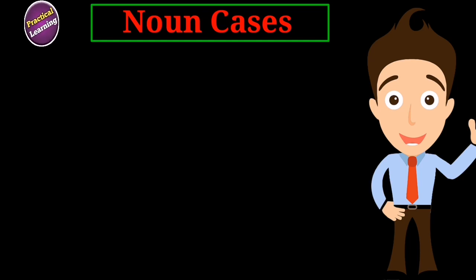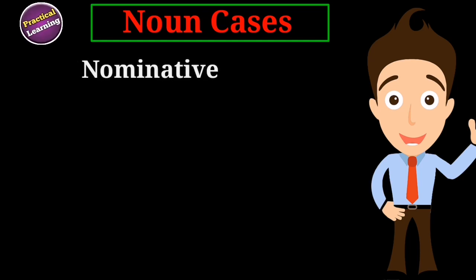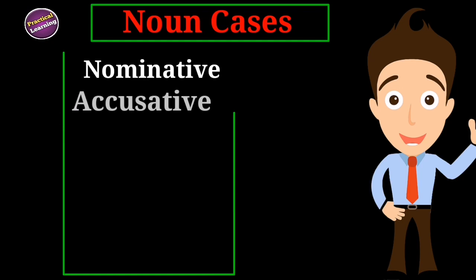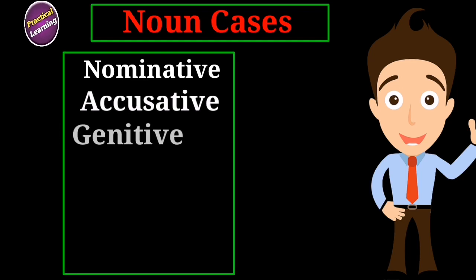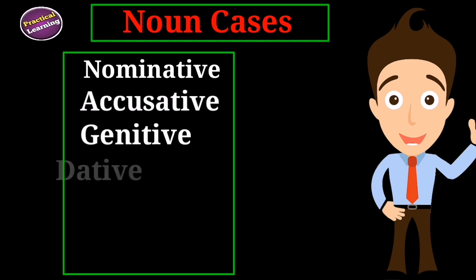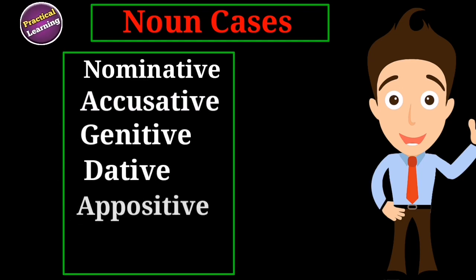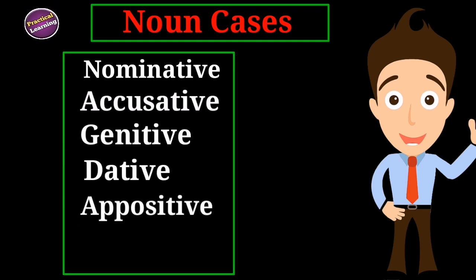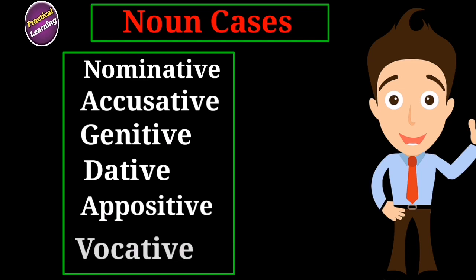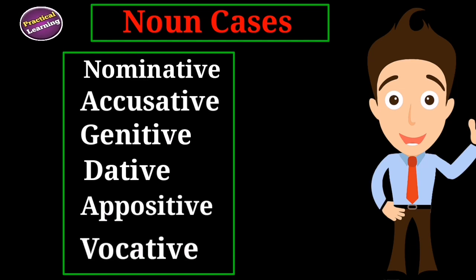There are six cases of a noun and they are: nominative, accusative, genitive, dative, appositive, and vocative.